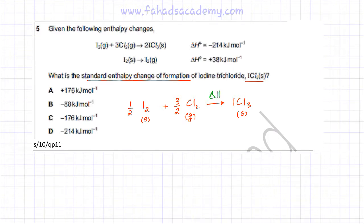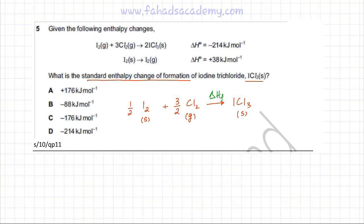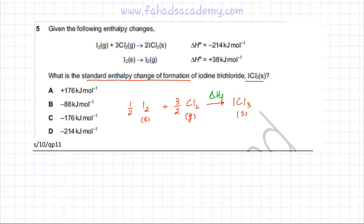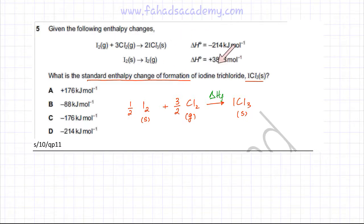The enthalpy change for this reaction is the enthalpy of formation of ICl₃ solid — this is the unknown I need to find. To do this, I'm going to draw a Hess cycle and create another path. Hess's Law states that the energy changes of one path are the same as the energy changes of another path, as long as the reactants and products are the same. So I'll start from the reactants and create an alternative path with known enthalpy changes.